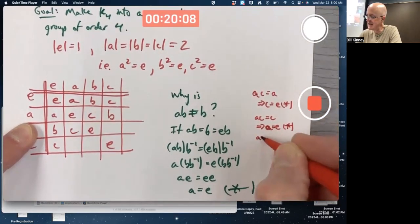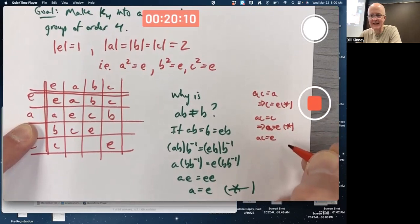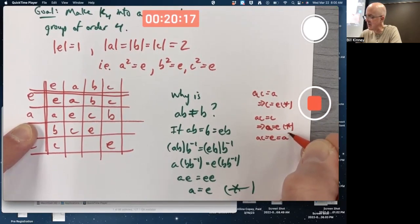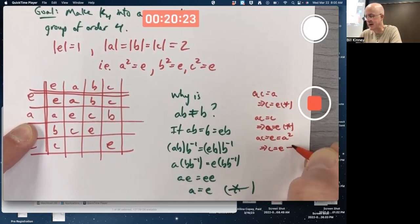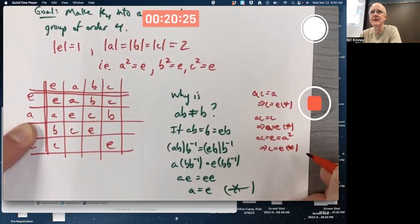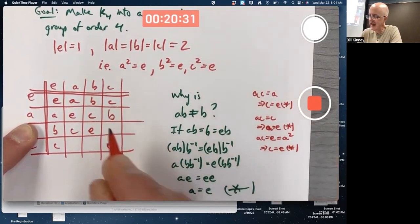If A times C equals the identity, that would be a problem as well because the identity is A squared. If you canceled one of the A's, that would imply C is the identity, a contradiction. Just little tiny arguments. It would have to be B.